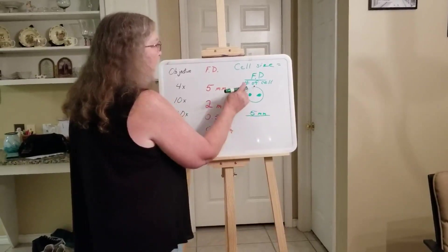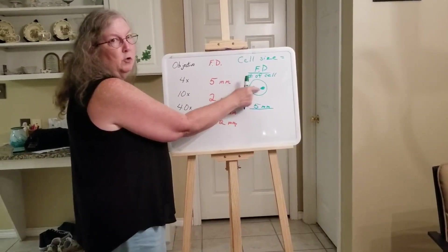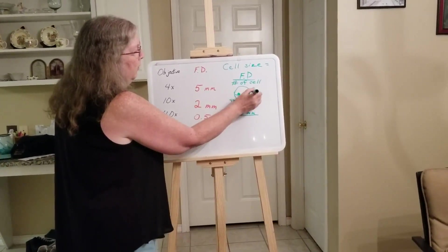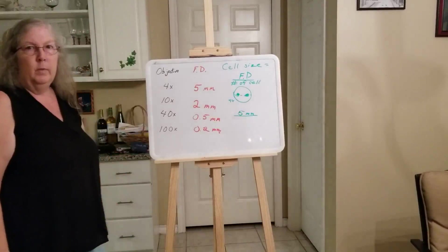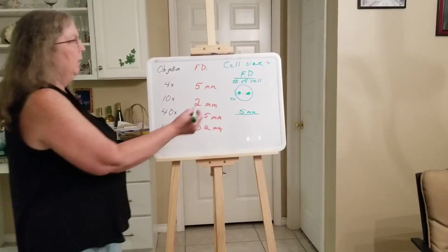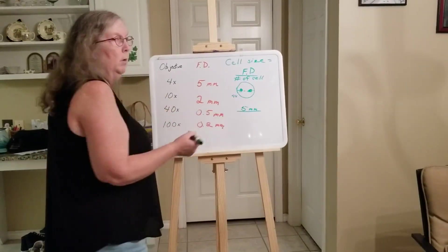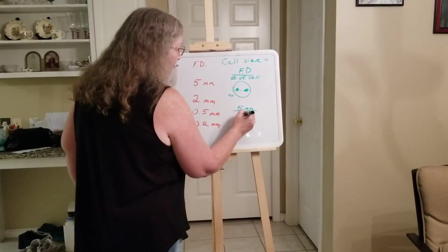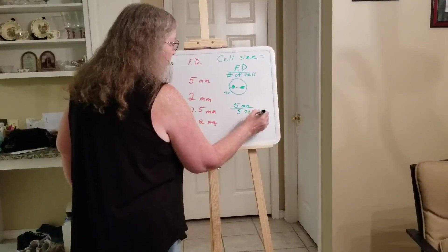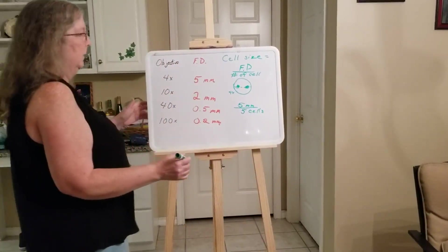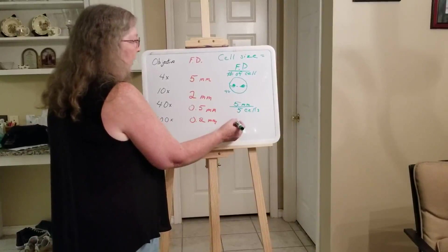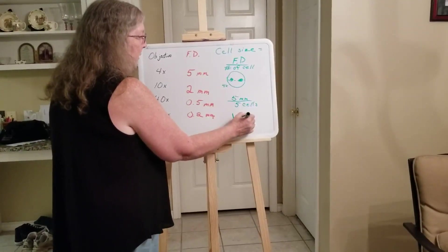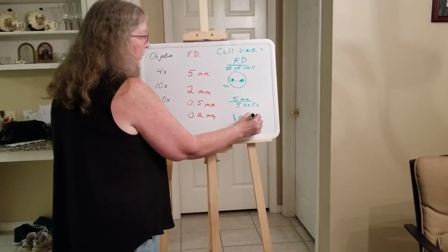So you would take the field diameter, which is 5 millimeters. You divide that by, not the number of cells that you see here, but how many would you estimate to go across the diameter here? So if we just try to make this easy, and let's just say, if we line the cells up here in a row, let's say there'd be 5 cells. So now 5 divided by 5 is 1. So the size of each individual cell is 1 millimeter per cell. That's how big 1 cell is.